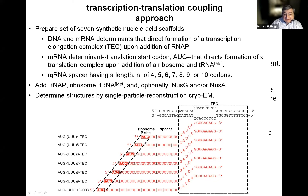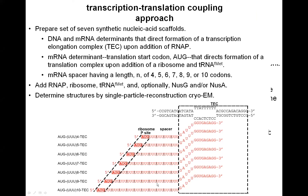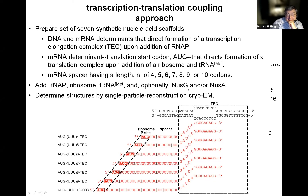Each of the seven scaffolds had a spacer between the determinants forming the transcription elongation complex and the translation initiation complex, and that spacer differed in length by four, five, six, seven, eight, nine, or ten codons. For each of those, we added RNA polymerase, ribosome, initiating tRNA, and optionally the coupling factors, and determined structures by single-particle reconstruction cryo-EM.